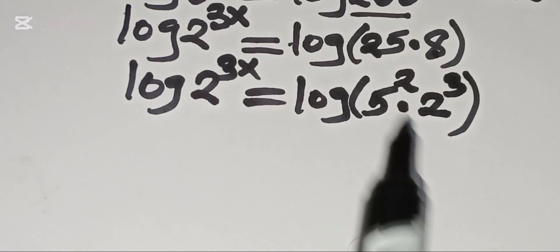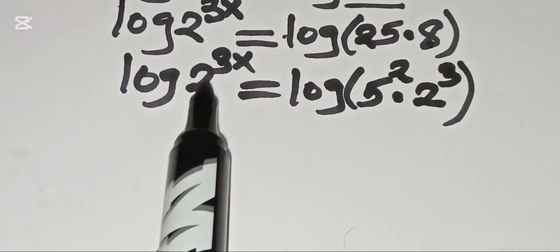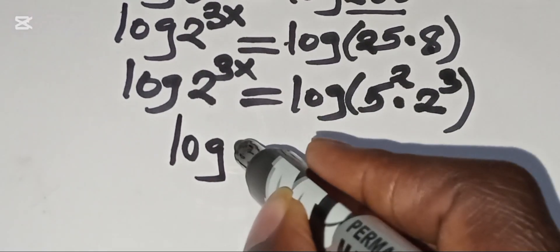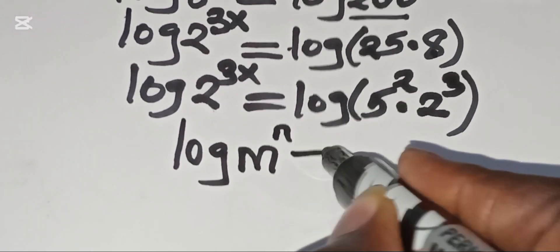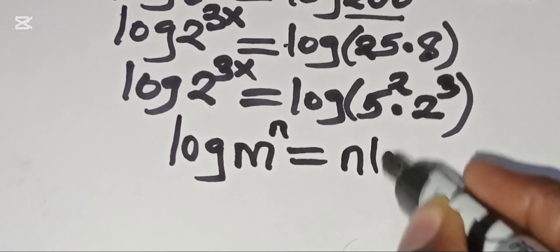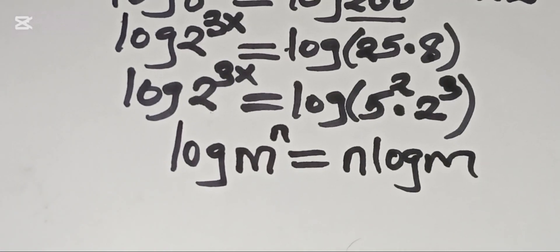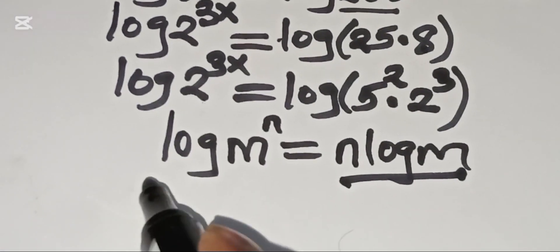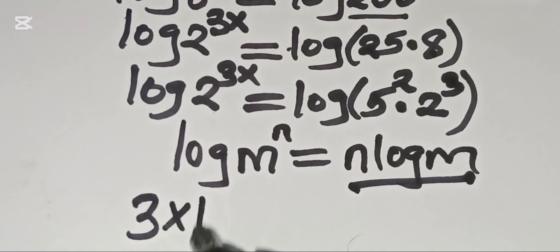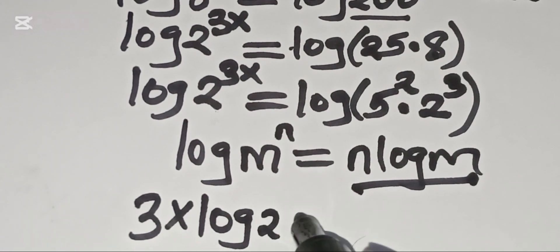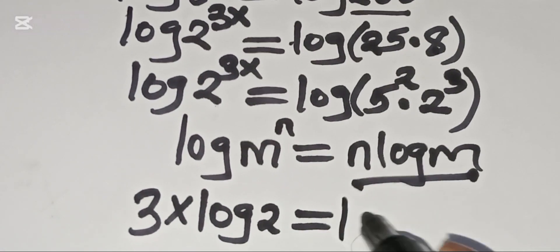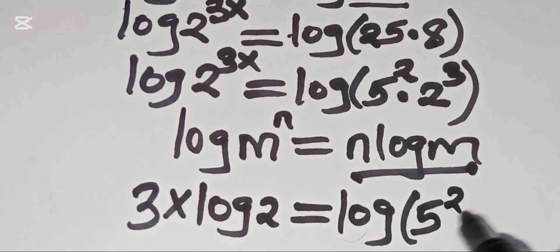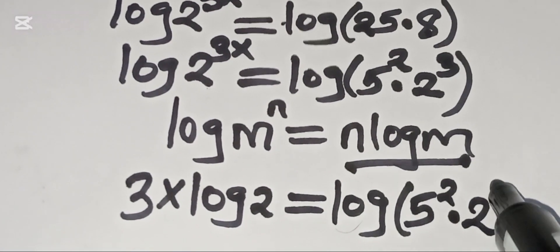Now, log of 2 raised to the power 3x is in the form log(m^n), which we can express as n·log(m). Applying this property, we get 3x·log 2 equals log of 5 squared multiplied by 2 raised to the power 3.